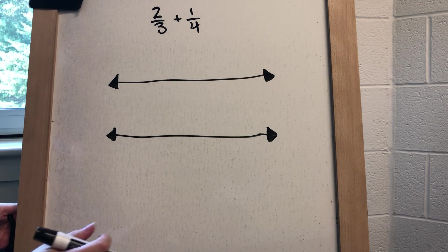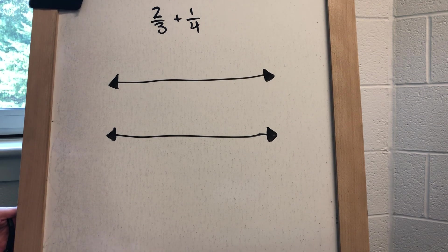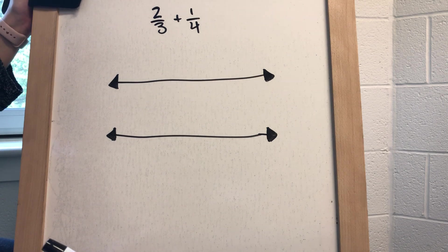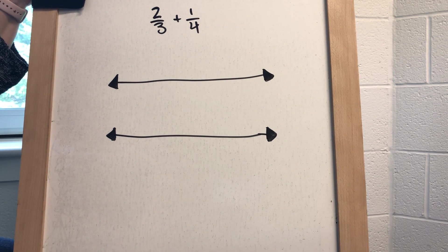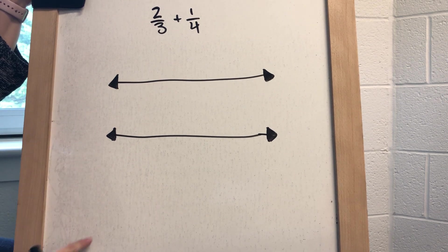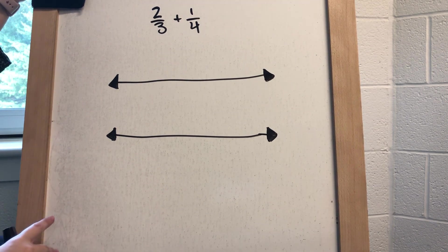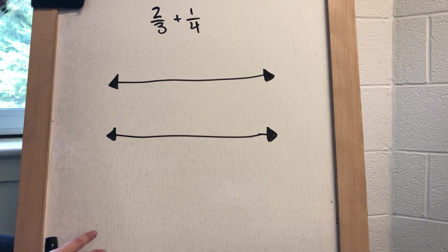Today we're going to move into adding fractions with unlike denominators. For the first strategy, we are going to use a number line or a double number line in order to add these fractions.